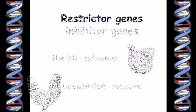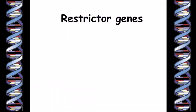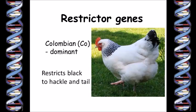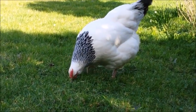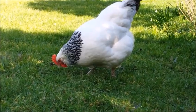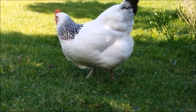Other genes can also have an effect on the black eumelanin in different ways that make patterns either on each feather or on the bird as a whole. These are called restrictor genes. A well-known restrictor gene is the Columbian gene, denoted as CO. This restricts the black eumelanin pigment to the hackle and tail feathers. The resulting Columbian pattern is what we see in a Light Sussex like Myliza — the only places that show the black eumelanin color are her tail and hackles.